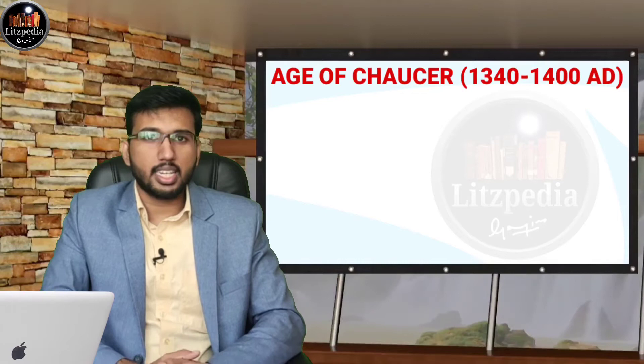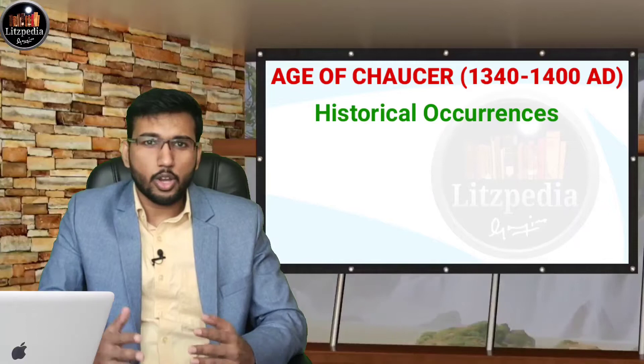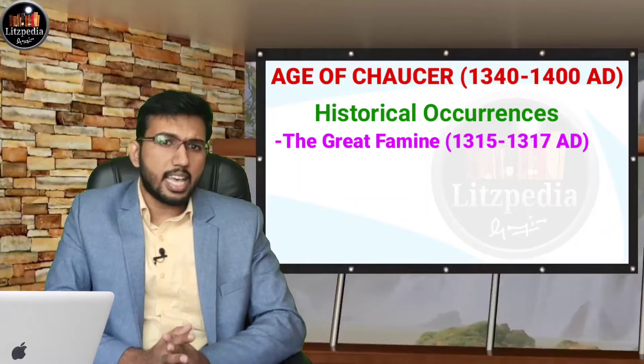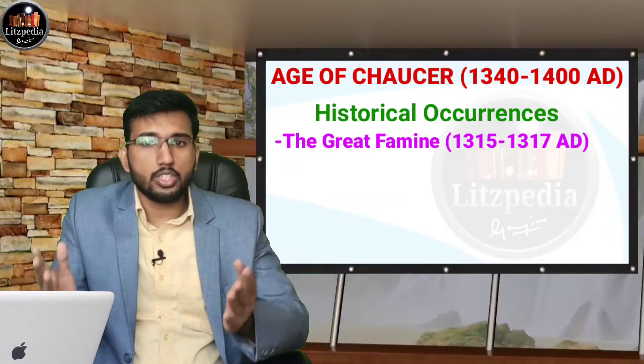First, we need to discuss the historical background of the Age of Chaucer, which is named after the great writer Geoffrey Chaucer. One of the important historical events is the Great Famine, between 1315 to 1317. By 1300, Europeans were farming almost all the land they could cultivate, and a population crisis developed. Climate changes in Europe produced three years of crop failures between 1315 to 1317.